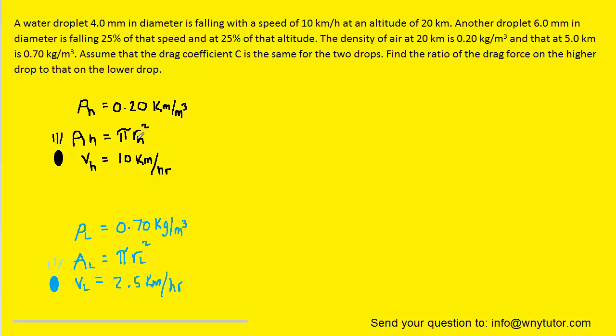And then if we look at the radii of the drops, we have Rh and RL. And the question notes that the diameter of the higher drop is 4 millimeters and that of the lower drop is 6 millimeters. So we're going to substitute in those values respectively.